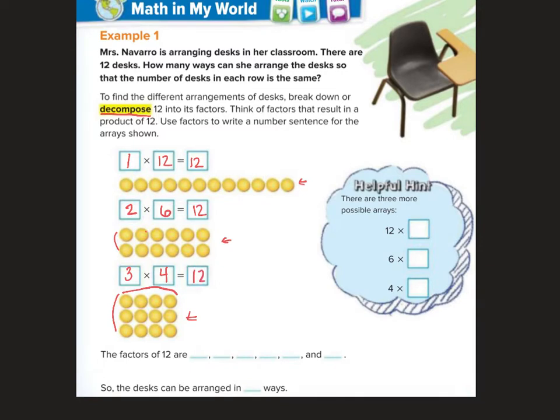Okay so that means the factors of 12 are - now we always write when we're listing factors we always write them from least to greatest. So I would write down 1, 2, 3, 4, 6, and 12 are the factors of 12. So the desks can be arranged in 1, 2, 3, 4, 5, 6 different ways because there are 6 different factors of 12.